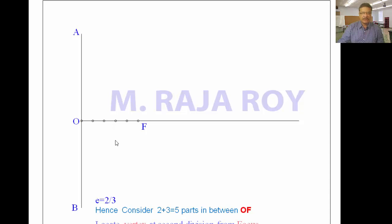Next, you have to locate the vertex. Locate the vertex at the second division from the focus, because the numerator indicates the distance from the focus. Here the numerator is 2, so from the focus select the second division. That means somewhere here you will get the vertex.